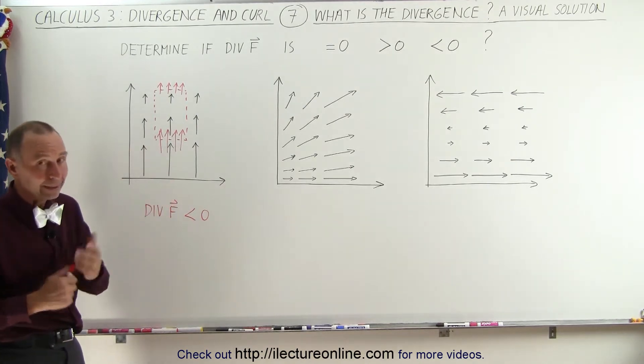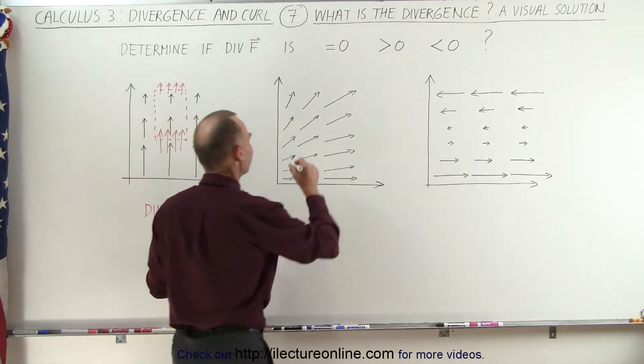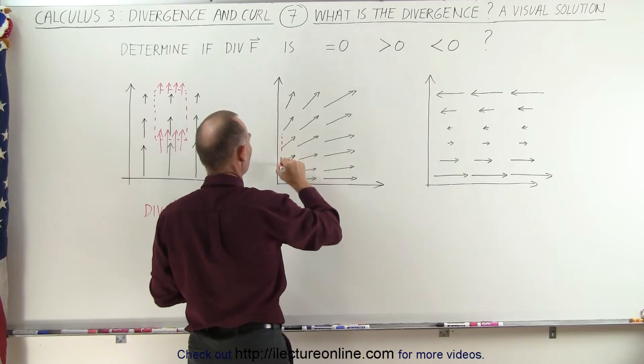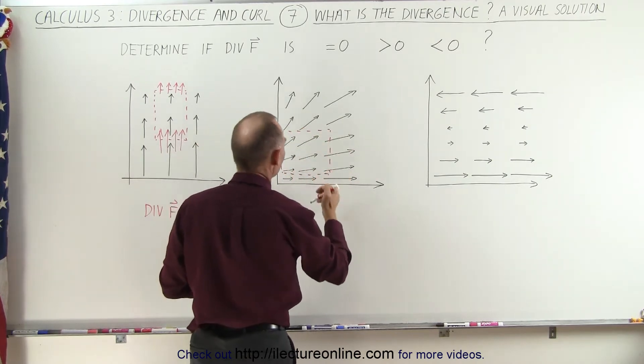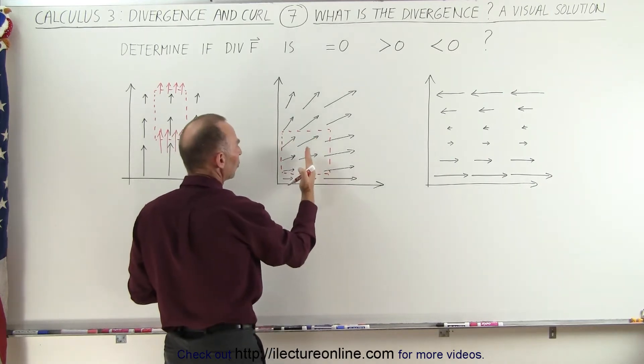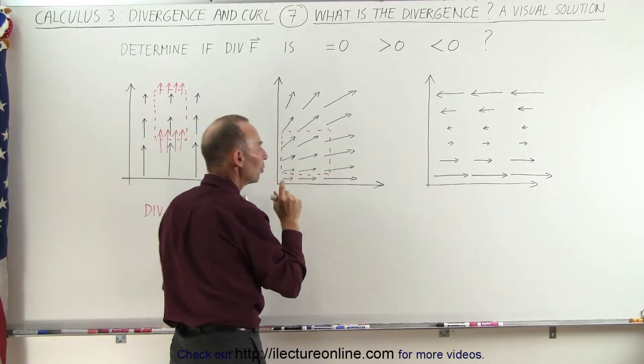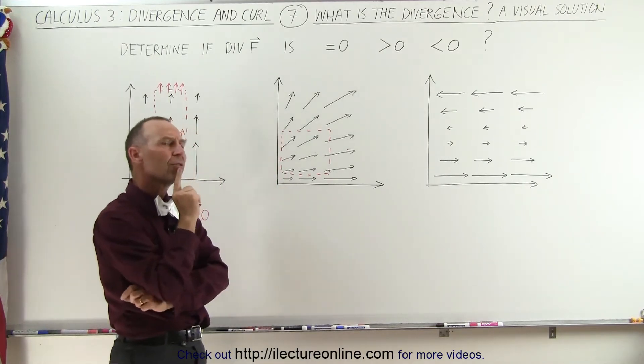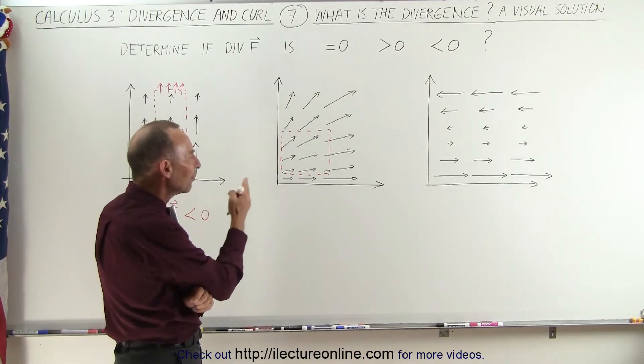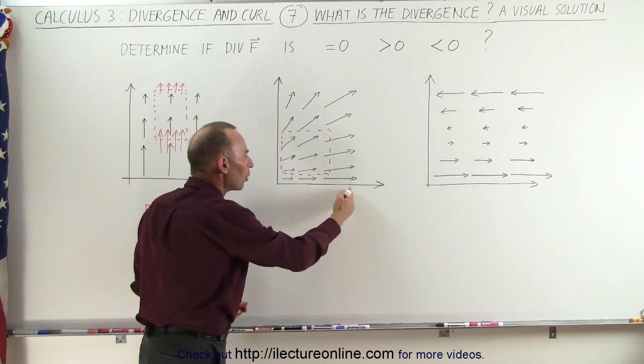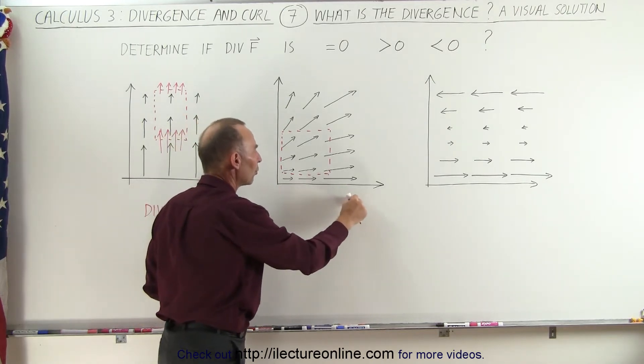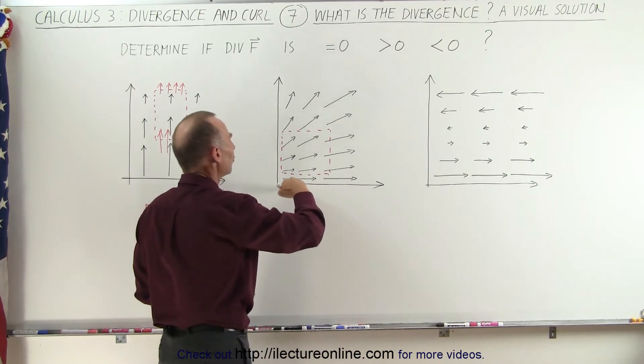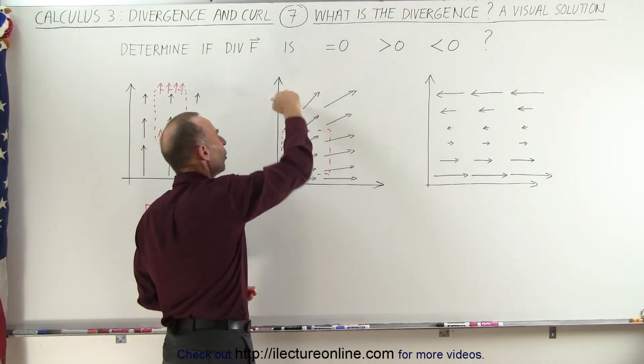In the next example, again, let's draw a box and see what we get. So we draw a box here. And we can see that towards the bottom and towards the left, the arrows are smaller, which means that the vector field is getting stronger, or I should say the magnitude of vector field is getting larger as we go to the right. And it looks like the magnitude of vector field is getting larger as we go up.